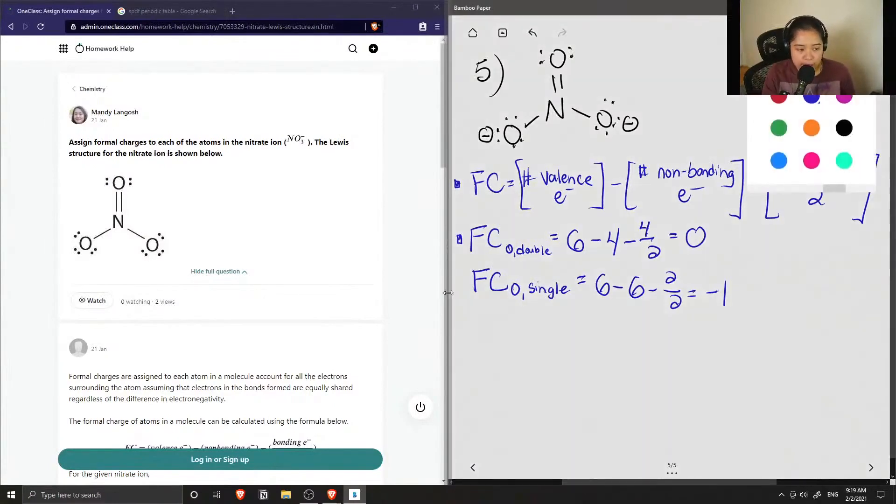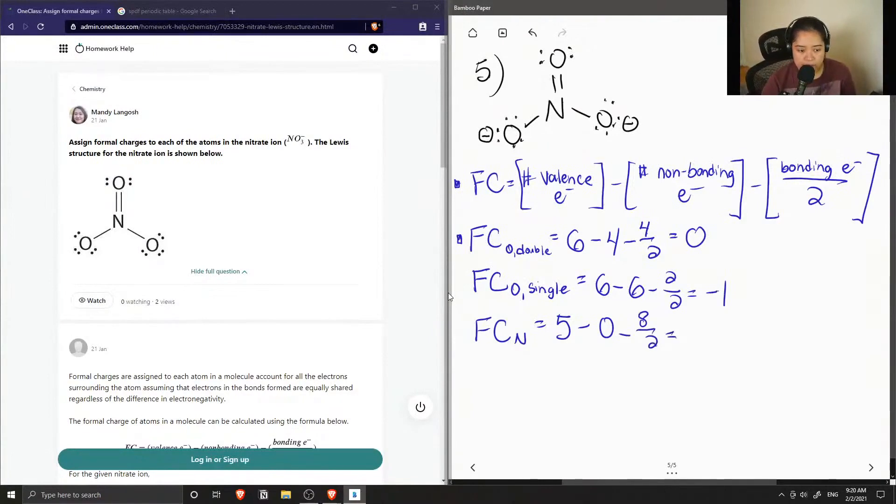Lastly, we can calculate the formal charge of nitrogen. Nitrogen has five valence electrons, and there are no lone pairs on the nitrogen, so there are zero non-bonding electrons. We can count out four bonds to the nitrogen, so we have eight bonding electrons divided by two. This gives us a formal charge of plus one.